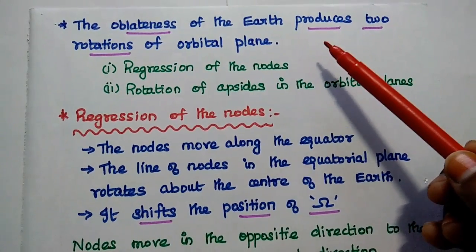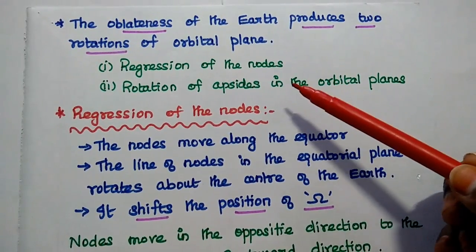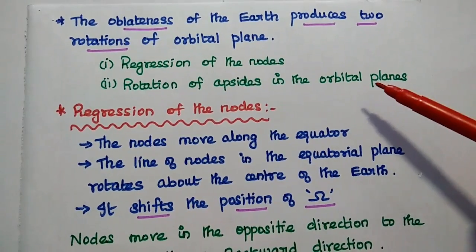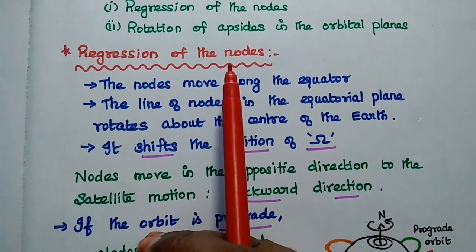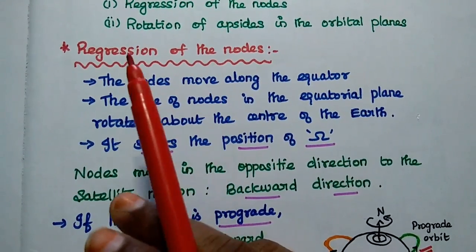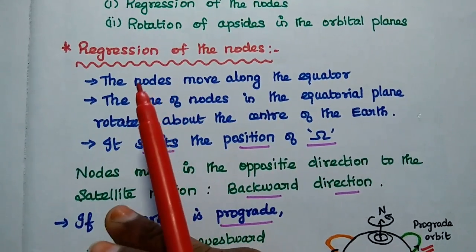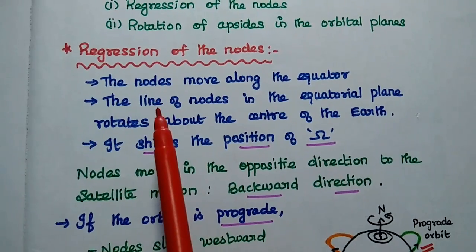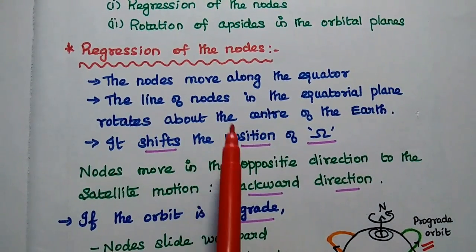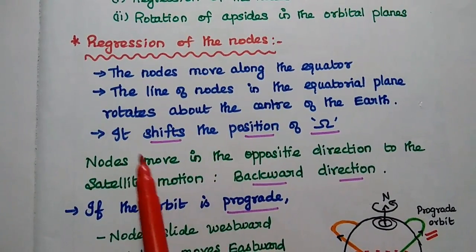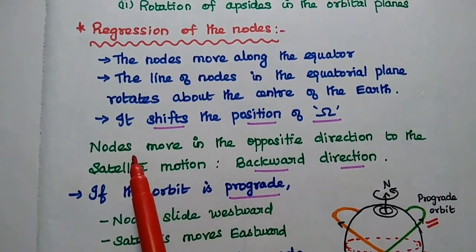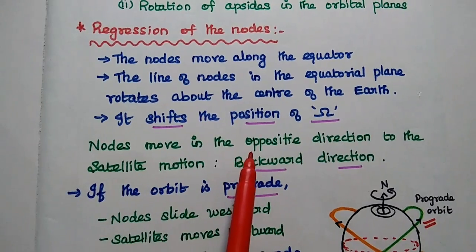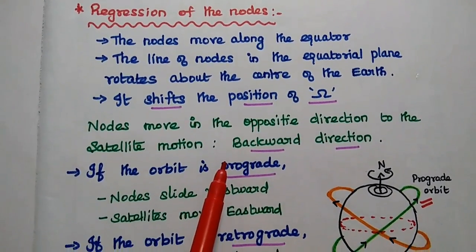The oblate spheroid causes two rotational variations of the orbital plane: the first one is regression of the nodes, and the next one is rotation of apsides in the orbital plane. Regarding regression of the nodes: nodes represent the ascending node and descending node which are present in the equatorial plane. The nodes move along the equator — the line of nodes in the equatorial plane rotates about the center of the Earth. Due to the oblateness, it shifts the position of right ascension of the ascending node, that is the omega angle. The nodes move in the opposite direction to the satellite motion — simply the backward direction.